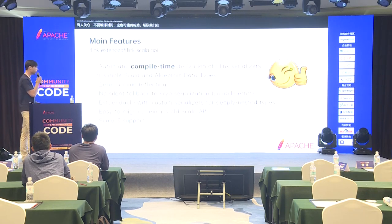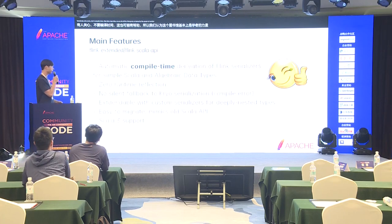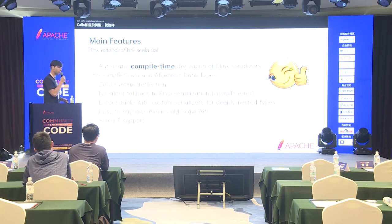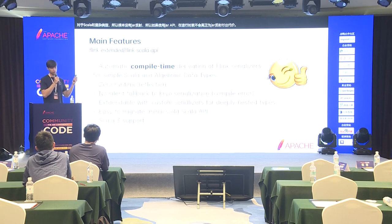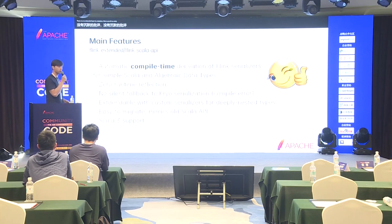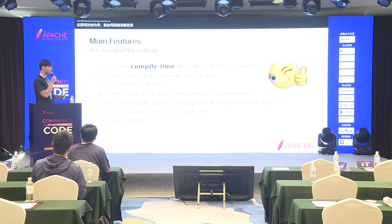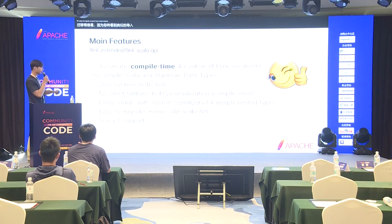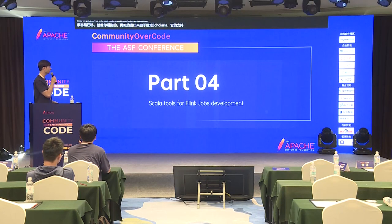The main features of this library are basically the power of Scala. Automatic compile-time derivation of Flink serializers for Scala and more complex types — there is no Java reflection at all, so you don't pay the price of Java reflection at runtime. There is no silent fallback to Kryo serialization. There will be compile errors, so you don't need to run your job to know if your types are inefficiently serialized — you will get a compiler error. This is thanks to Scala compile-time macros, which are natively supported by Scala. It's easy to migrate, as you've seen from the similar imports, and it supports Scala 3.